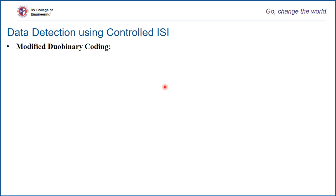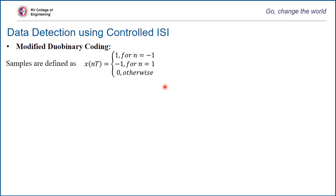We'll first take modified duobinary coding without pre-coding. The disadvantage of without pre-coding is error propagation, irrespective of whether it is duobinary or modified duobinary. Modified duobinary differs from duobinary in the aspect of signal samples. Samples are defined as 1 and minus 1 alternatively — for n equal to minus 1 it is plus 1, and for n equal to 1 it is minus 1 — so we are intentionally adding a sample to have controlled inter-symbol interference.